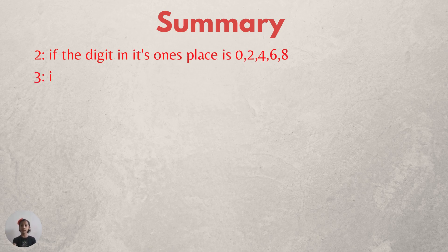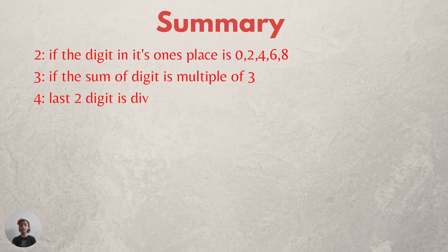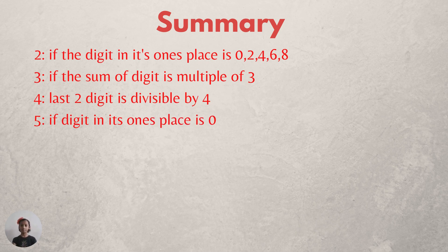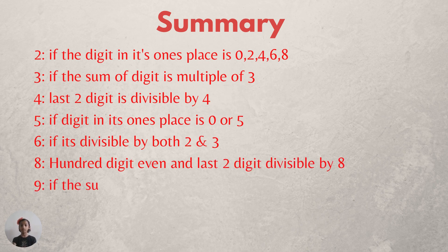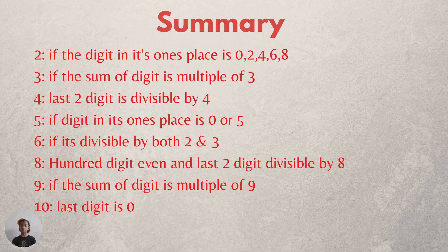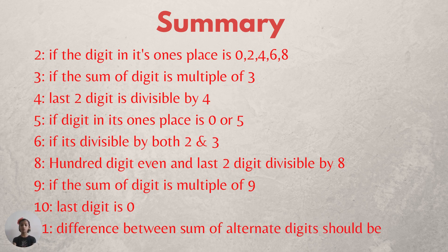Now let's summarize what we have learned. A number is divisible by two if the digit in its ones place is zero, two, four, six, or eight. A number is divisible by three if the sum of its digits is a multiple of three. A number is divisible by four if the number formed by its last two digits is divisible by four. A number is divisible by five if the digit in its ones place is zero or five.